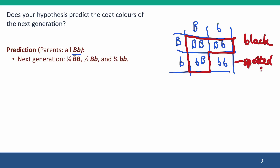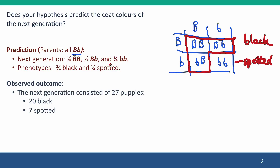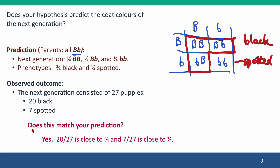What did the cross actually produce? It produced 27 puppies: 20 black and 7 spotted. How does that compare with our hypothesis? It compares pretty well. 20 out of 27 is very close to three-quarters, and 7 out of 27 is very close to one-quarter. So it's looking good.